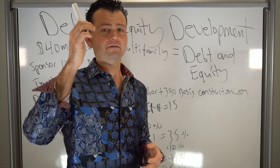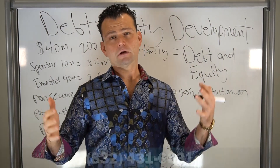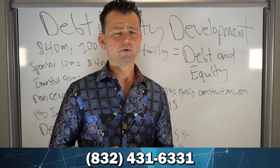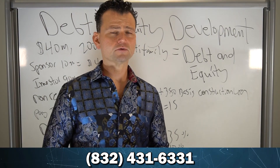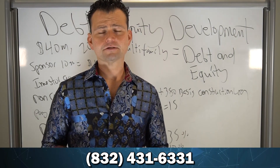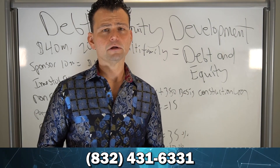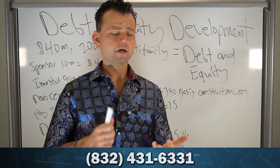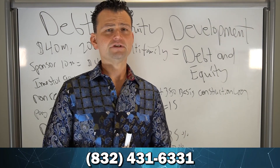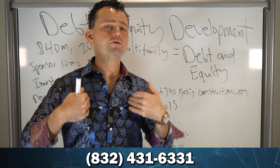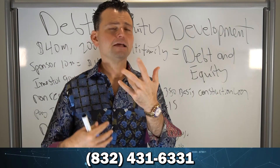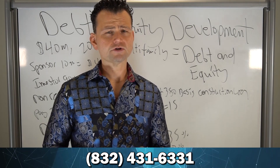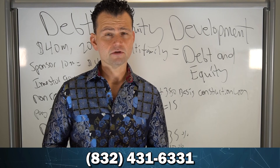This is a more customizable package tailored to help you get your project up and running. If you're an investor trying to do at least a $10 million project or higher, reach out to our office at 832-431-6331. It doesn't matter where the project is — Hawaii, New York, California, Texas, Florida — we want to help you get the funding. If you're a good sponsor, you have a great package, and you need help with the equity and the debt, we are the source. Check out my next video on Fannie Mae versus the banks.